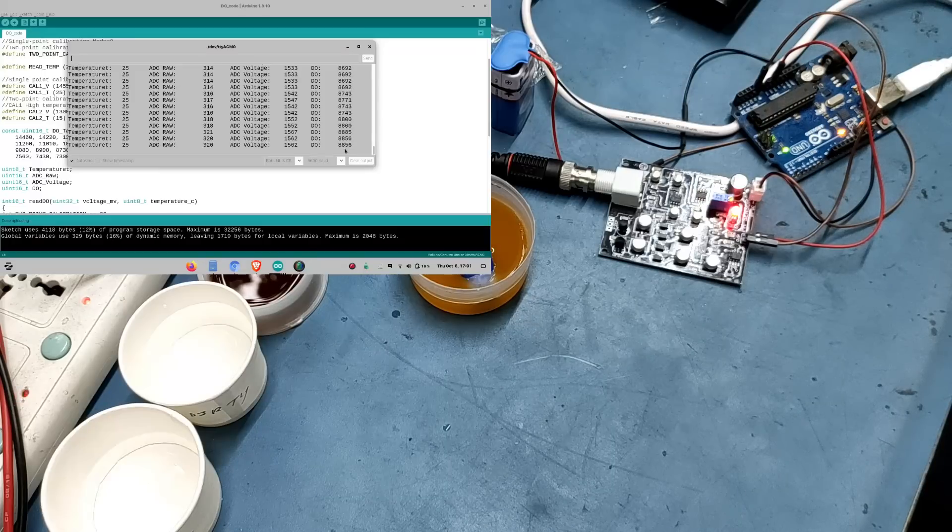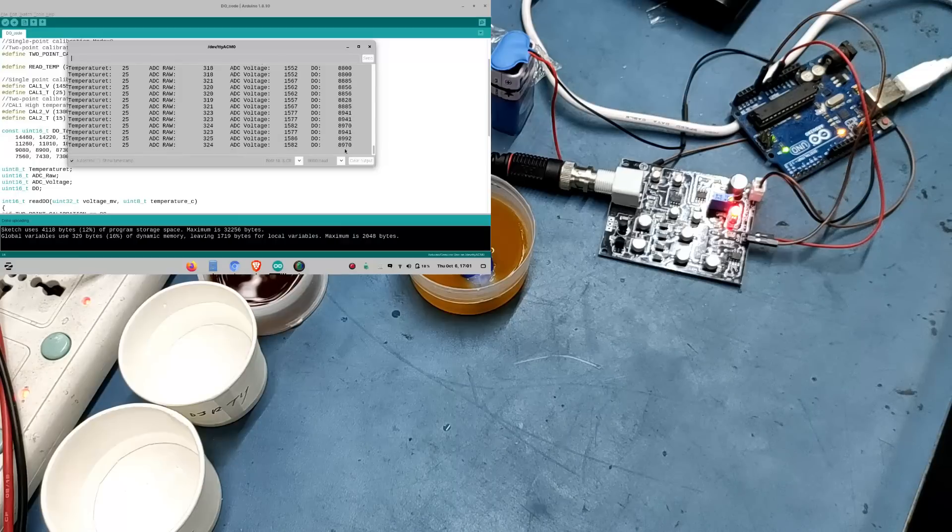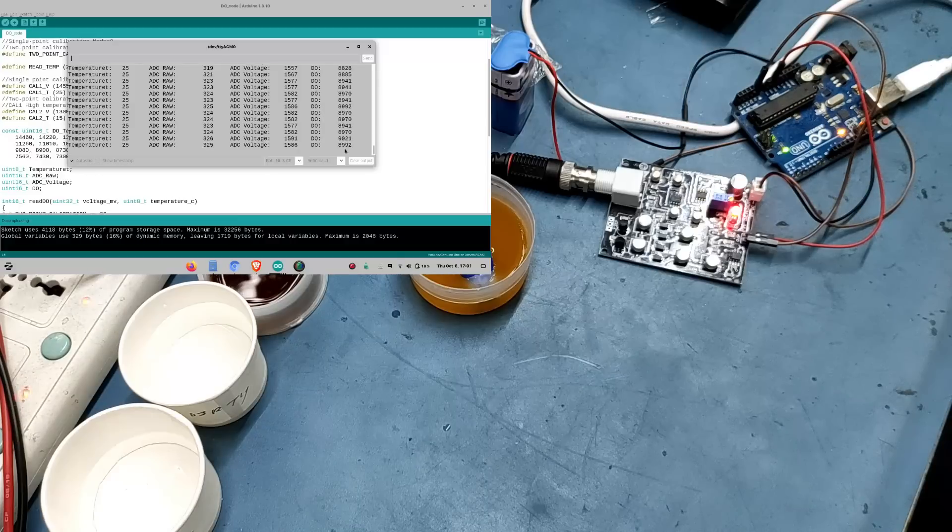The standard accessories included are DO electrode one number, signal converter board one number, instruction manual one number, DO membranes set of 4 pieces and last but not least potassium chloride crystals up to 2 grams.